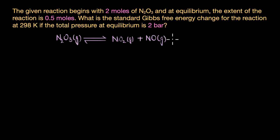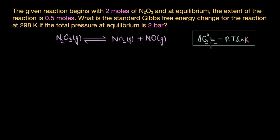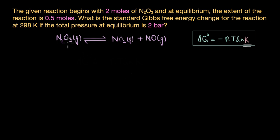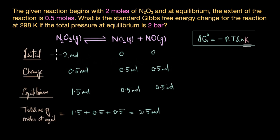To solve this question, we have to go back to our equation: delta G° = -RT ln K, which relates the standard Gibbs free energy with the equilibrium constant. To calculate delta G°, we first need to figure out the K value, and in order to find the equilibrium constant, we need to figure out the number of moles of reactants and products present at equilibrium. For that we will use the ICE table — initial concentration, change in concentration, and equilibrium concentration.